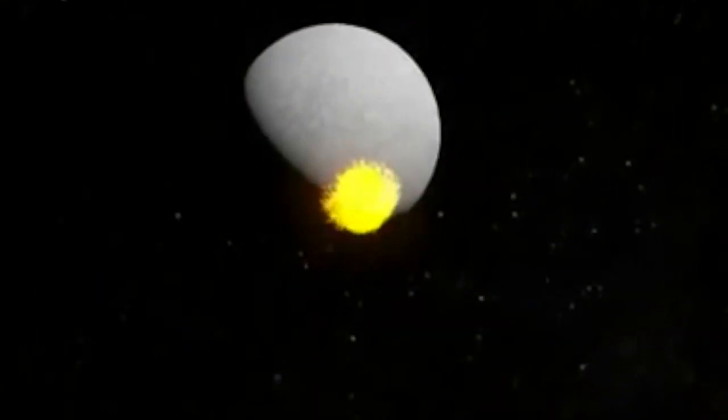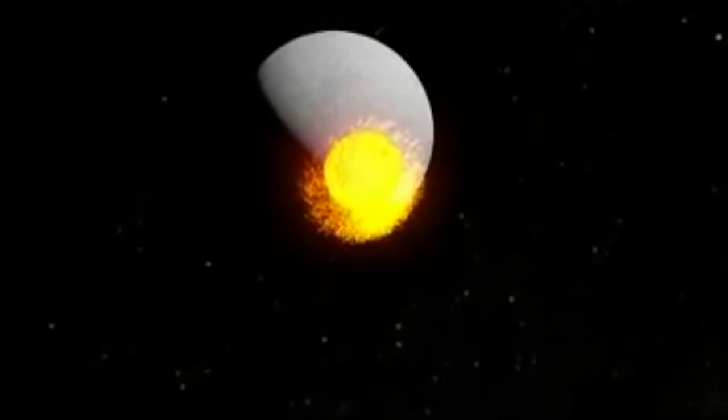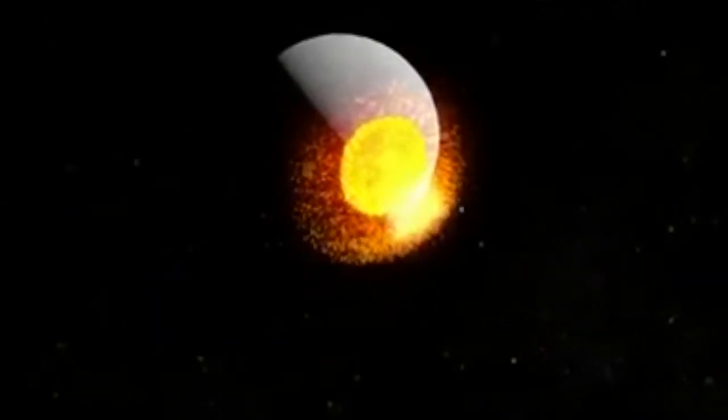Mercury has the weirdest orbit, having the most elliptical orbit in our solar system. Mercury has a perihelion of roughly 46 million kilometres, and an aphelion of about 70 million kilometres.